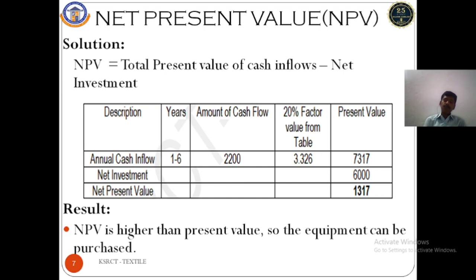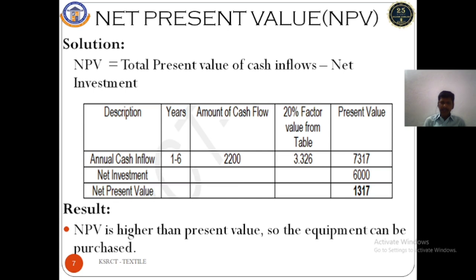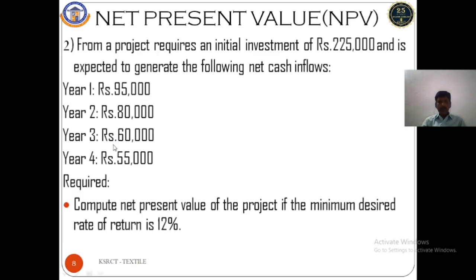We multiply the present value factor 3.326 by the annual cash inflow of 2,200 to get the total present value of cash inflows, which comes to approximately 7,317. The net investment is 6,000. So NPV = 7,317 minus 6,000 = 1,317. Since the NPV is positive, the equipment should be purchased.